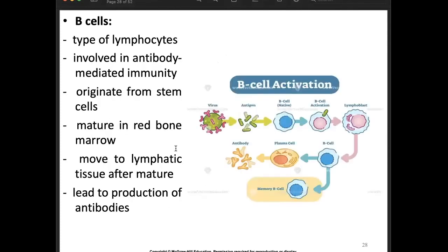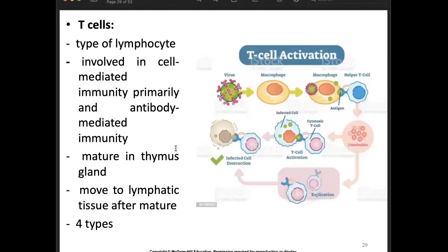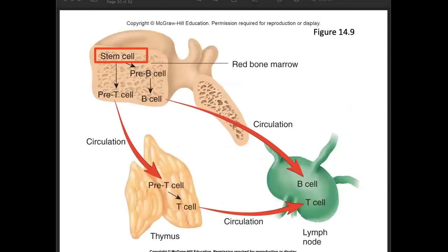B cells are a type of lymphocyte involved in antibody-mediated immunity — they originate from stem cells, mature in the red bone marrow, and move to lymphatic tissue after maturation, leading to the production of antibodies. T cells are a type of lymphocyte involved in cell-mediated immunity; they mature in the thymus gland and move to lymphatic tissue after maturation. Both B cells and T cells originate from stem cells, as shown in the illustration of their origin and processing.